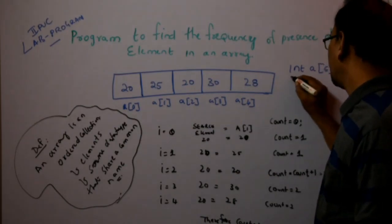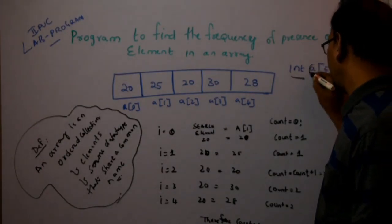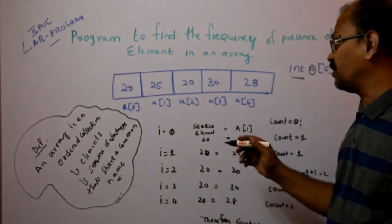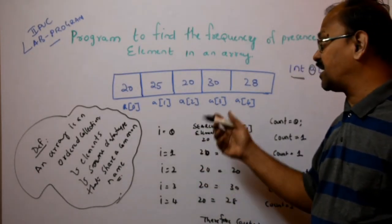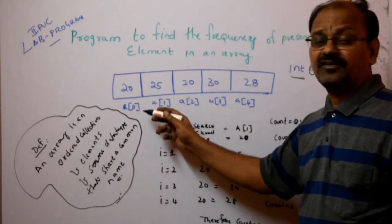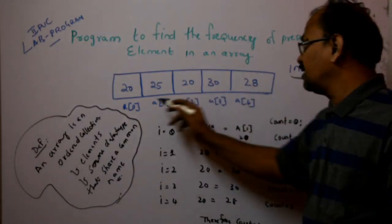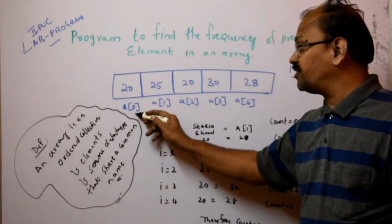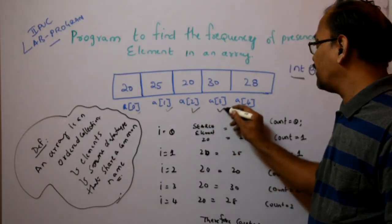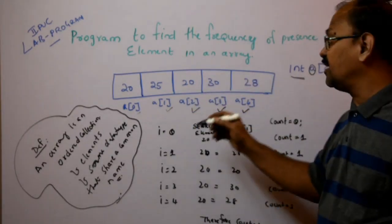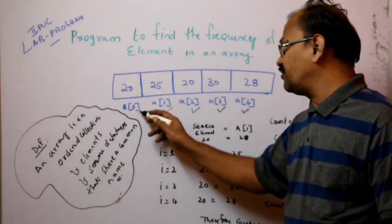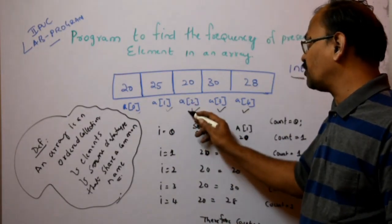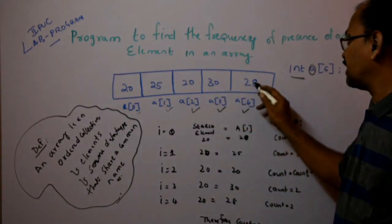For example, this is an array that contains the integer data type. The array name is A, and the size of the array is 5 elements. Always, from the beginning in C++, we have studied arrays in first year PUC — the array starting location will always be 0. So A means 5 memory locations will be created in the system: A[0], A[1], A[2], A[3], and A[4]. Now we have filled some elements: A[0] is 20, A[1] is 25, A[2] is 20, A[3] is 30, and A[4] is 28.